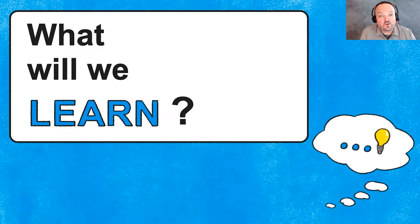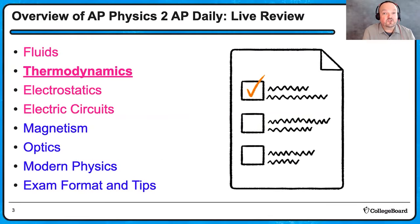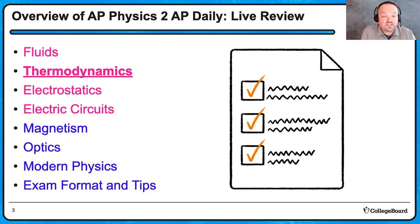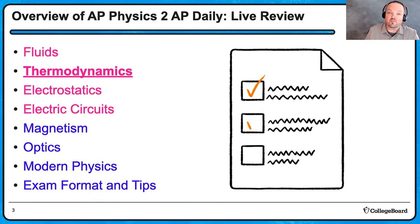Let's start with an overview of this week and next week of the AP Daily Live Review sessions. Yesterday we went over fluids — that was unit one. Today we're going to talk about unit two, which is thermodynamics. Tomorrow I'll go over electrostatics. On Thursday, Mr. Mancino from Connecticut is going to start off his four sessions covering electric circuits, then next week magnetism, optics, and modern physics. Then he'll pass the reins back to me, and I'll talk about the AP Physics 2 exam format and tips for the multiple choice and free response sections.